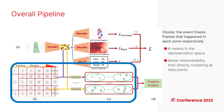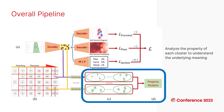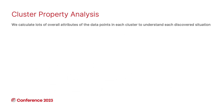Then we want to cluster these frames over this representation space. To do this, we first split the pitch into 30 different zones, and then we cluster the frames in each zone. Finally, we need to understand each cluster by analyzing the property of each resulting cluster. We calculate lots of statistical attributes of the data points in each cluster.